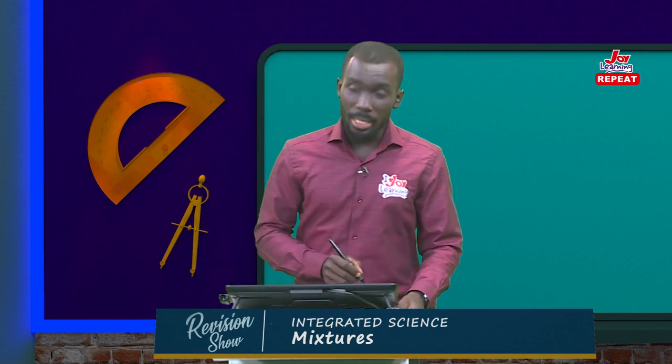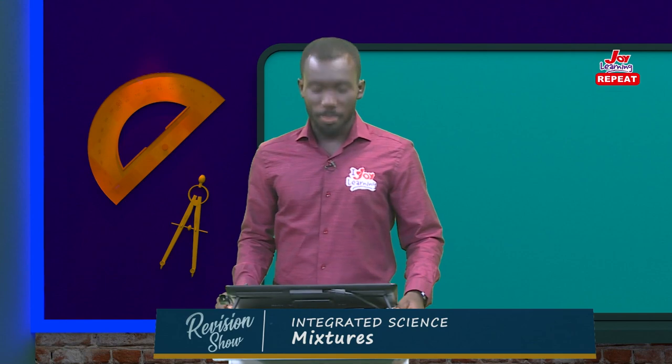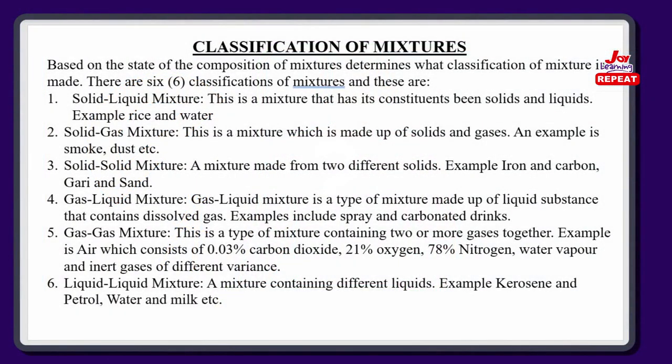The second type is solid-gas mixture. This is a type of mixture made up of solids and gases. I know you are thinking — what example can I give to support this? A clear example is smoke. Dust is another example. So smoke, dust, and other things you can think about are all solid-gas mixtures.